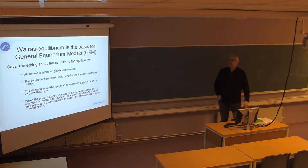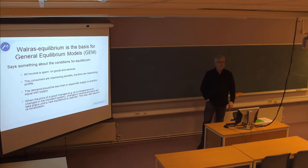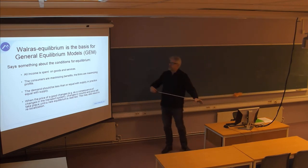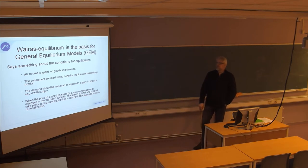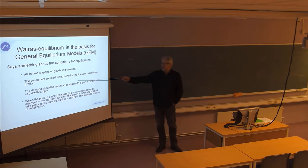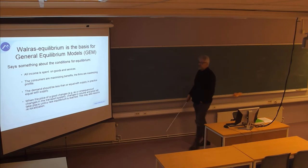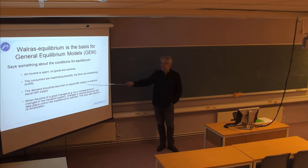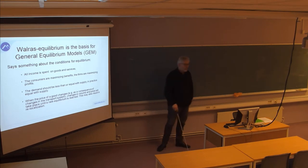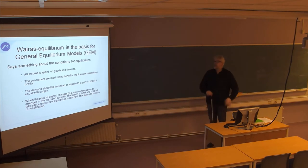Let's start with the basics here. This is taken from the Walrasian equilibrium notion — from microeconomic theory. The shorthand story is that all income that we earn is spent on goods and services. We are all maximizers of utility, and of profits if we are engaged as producers. The demand should not exceed supply, so we cannot consume more than is produced. Normally we assume the sum of demand is equal to the sum of supply.